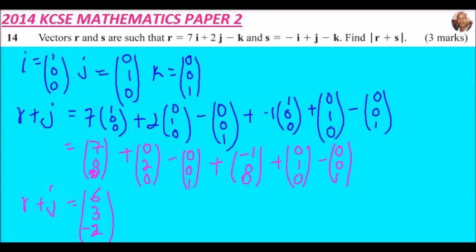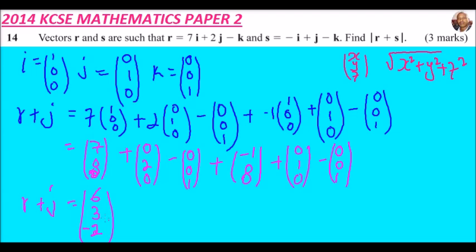To get the magnitude of a vector, if you have components x, y, and z, the magnitude is the square root of x squared plus y squared plus z squared.